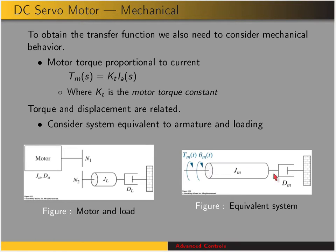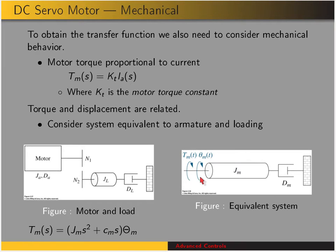We want to find an equivalent system in order to simplify the analysis. Here's the equivalent system — we just have what we refer to as JM, the moment of inertia, and CM, the equivalent damping. JM is just JA plus the reflected load inertia, and CM is just DA plus the reflected DL. Using that equivalent system, we get the transfer function between the motor displacement and motor torque, where JM·S² plus CM·S is the sum of the mechanical impedances.